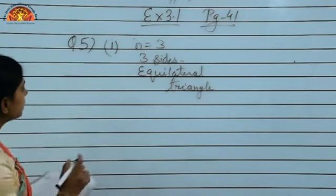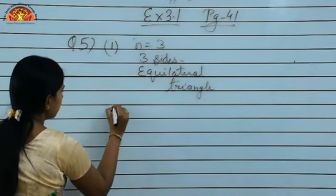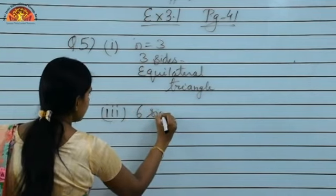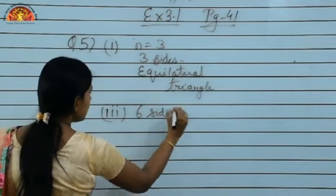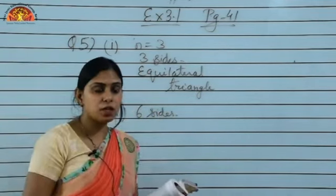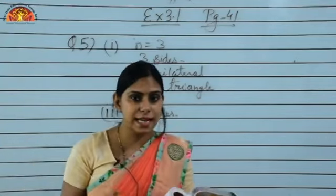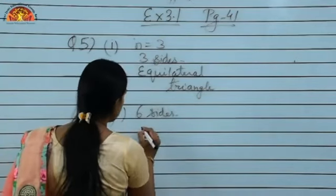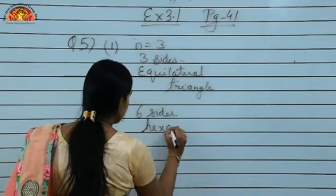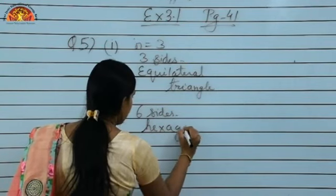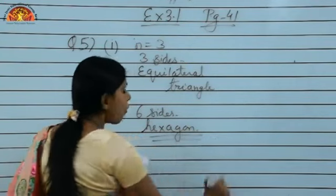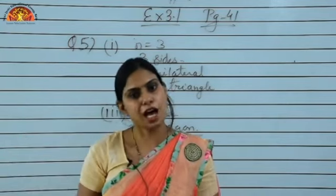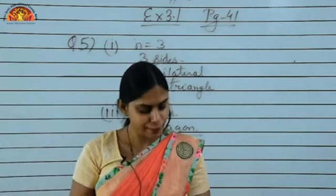For part 3, the number of sides is 6. A polygon having 6 sides is a hexagon. So the answer is a regular hexagon, in which all 6 angles and 6 sides are of equal measurement.